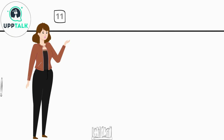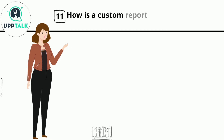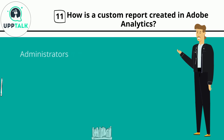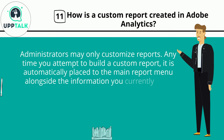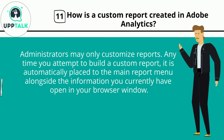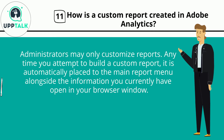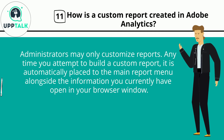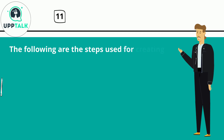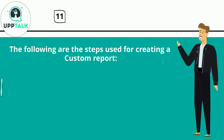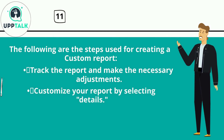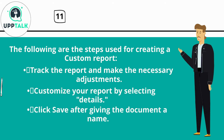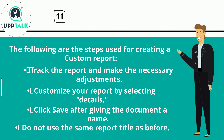Question 11: How is a custom report created in Adobe Analytics? Administrators may only customize reports. Anytime you attempt to build a custom report, it is automatically placed in the main report menu alongside the information currently open in your browser window. Steps for creating a custom report: track the report and make necessary adjustments, customize your report by selecting Details, click Save after giving the document a name, and do not use the same report title as before.